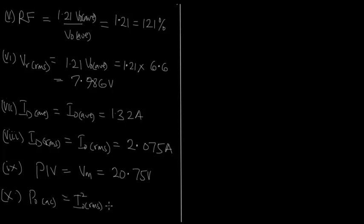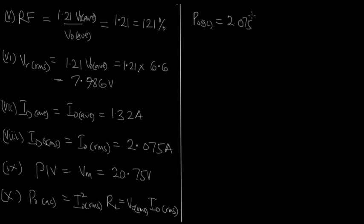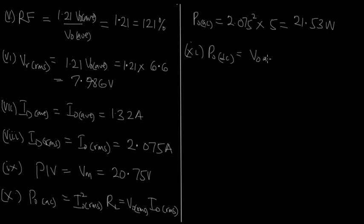The AC output power P_out AC equals the square of the RMS current times RL, which is also V_out RMS times I_out RMS. That gives P_out AC equal to 2.075 squared times 5, which is 21.53 watts. The DC output power P_out DC equals V_out average times I_out average, which is 6.6 times 1.32, equal to 8.71 watts.